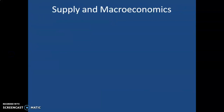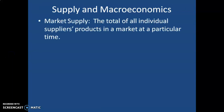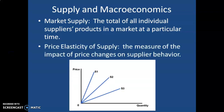Now let's look at supply in relation to macroeconomics. Market supply is the total of all individual suppliers' products in a market at a particular time. If I produce basketballs, I have my own supply curve; another basketball maker has a different one. If we add up all the supply curves of every basketball maker in the world, we get the market supply. We also have the price elasticity of supply, which measures the impact of price changes on supplier behavior.